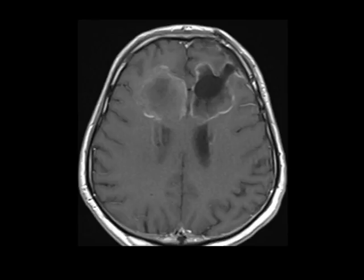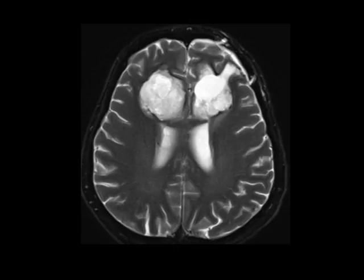These images demonstrate a T1 iso-intense, T2 hyper-intense, peripherally-enhancing mass with central necrosis, which courses along the genu of the corpus callosum. On susceptibility-weighted imaging, we also see that there is decreased signal along the margins, which is compatible with hemosiderin.